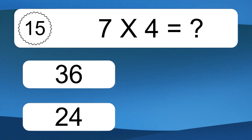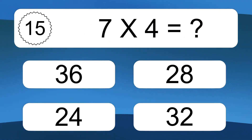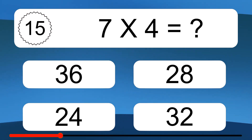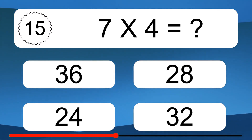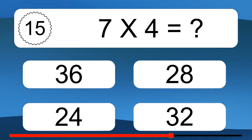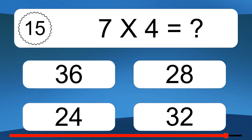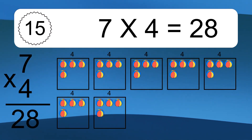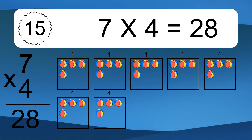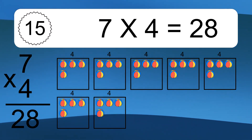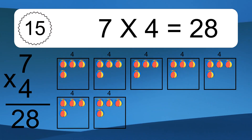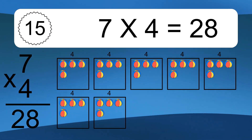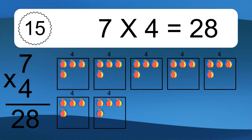Seven times four equals what? Seven times four equals 28. We have seven boxes, and each box has four colorful balls inside. If you count all the balls in all the boxes together, you will have 7 times 4 balls. This equals 28 balls.